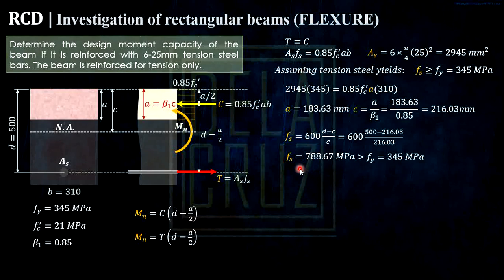But actually in the code, it's discouraged that Fs should not be less than 800 megapascal. From the code, if it's less than 800 megapascal, we will design the beam as doubly reinforced. But here we are investigating the flexural strength, we're not designing. So this is what will happen. There's an alternative by NSCP if it doesn't exceed 800 megapascal.